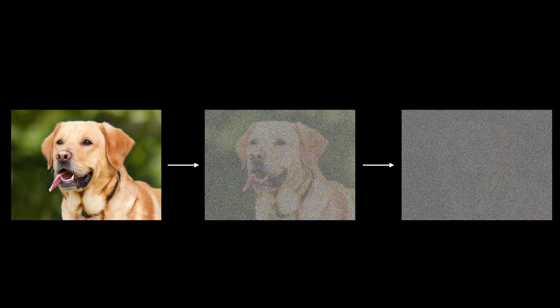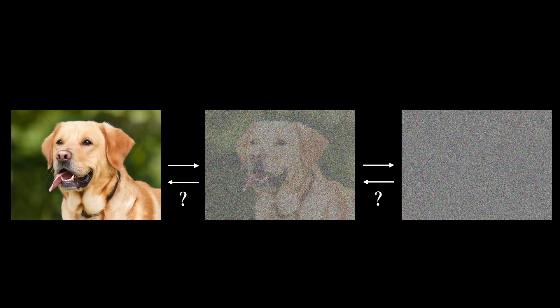Now, what if we could figure out how to undo this process? That is, start from a noise image, gradually remove the noise, and end up with a coherent image.